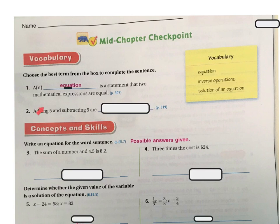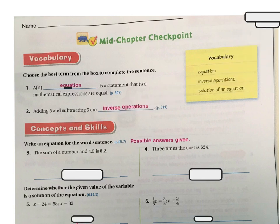Adding 5 and subtracting 5 are inverse operations, and so is dividing 5 and multiplying 5.